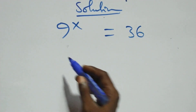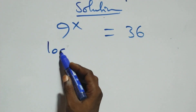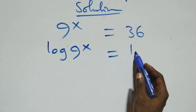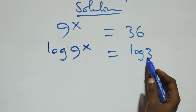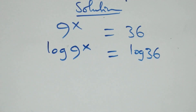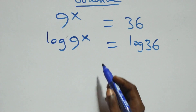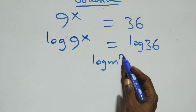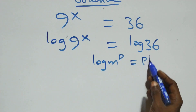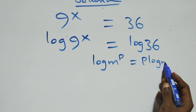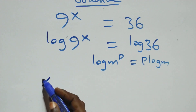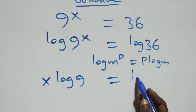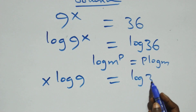Here we take the log on both sides: log of 9 raised to power x equals log of 36. The next step, we apply the power rule of logarithm — when we have log m raised to power p, this is the same as p·log m — so this becomes x·log 9 equals log 36.